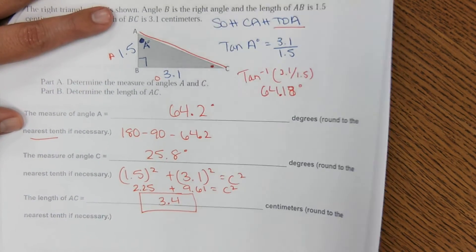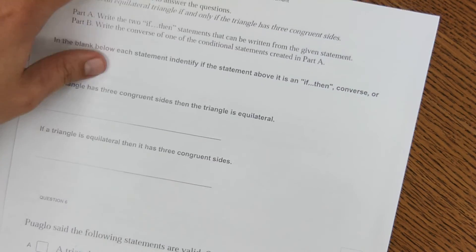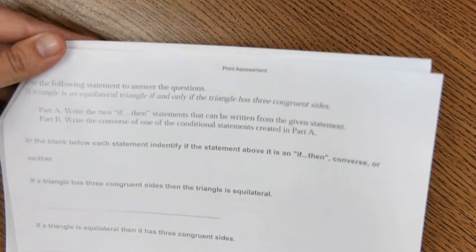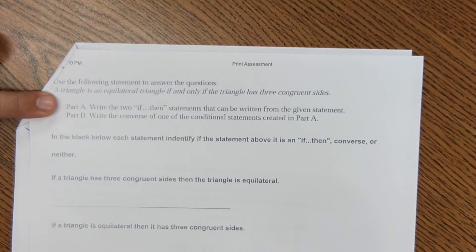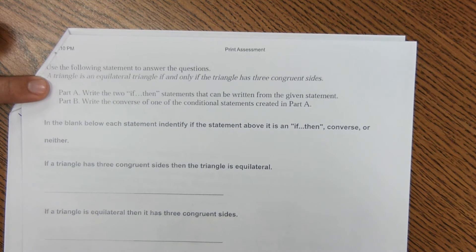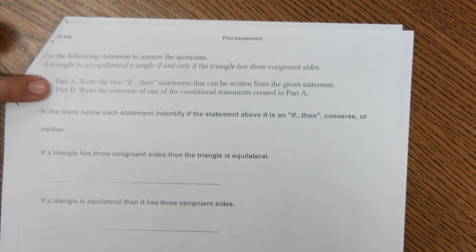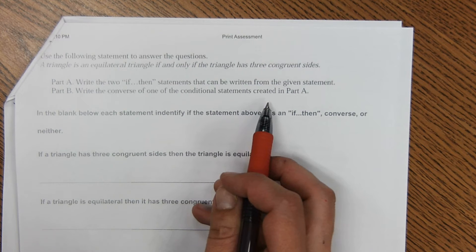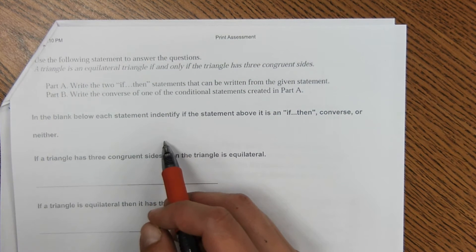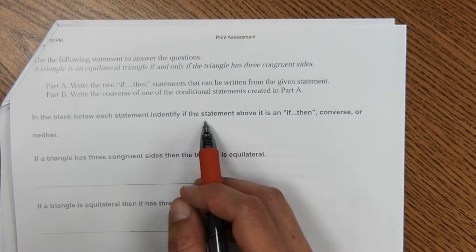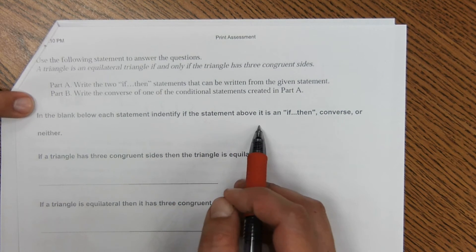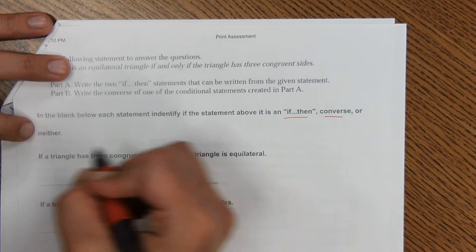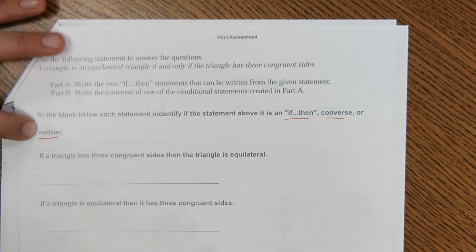Okay, next page. For this one, use the following statement to answer the questions. A triangle is an equilateral triangle if and only if the triangle has three congruent sides. Write the two if-then statements that can be written from the given statement. Write the converse of one of the conditional statements created in part A. In the blank below, each statement, identify the statement above as if-then, converse, or neither.